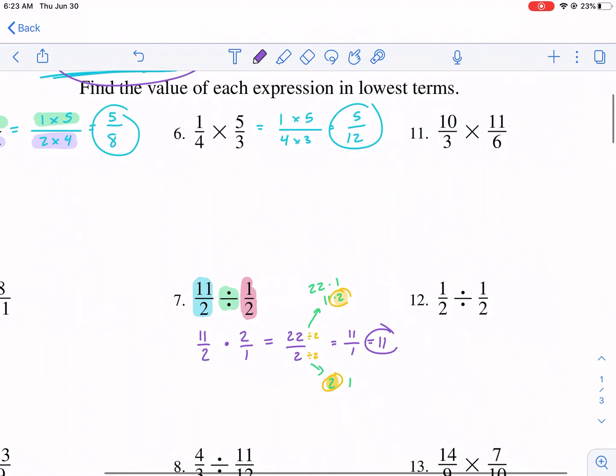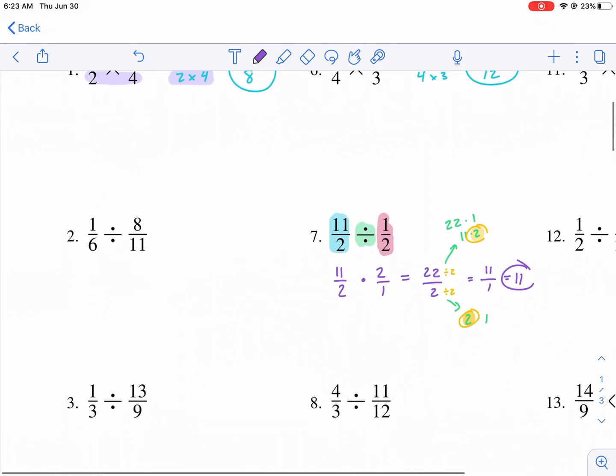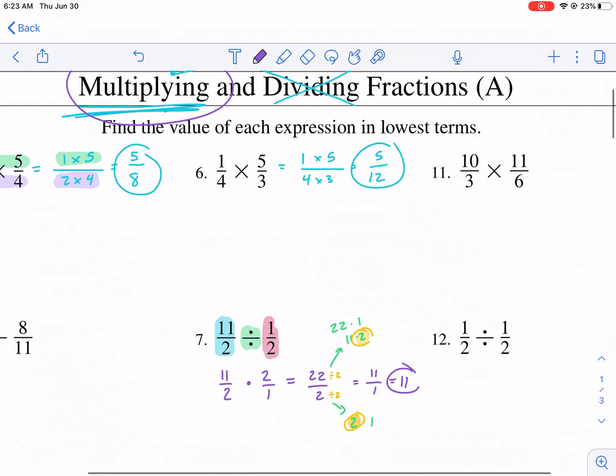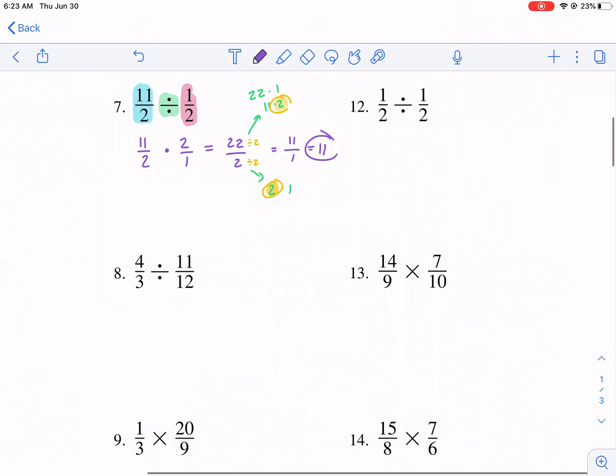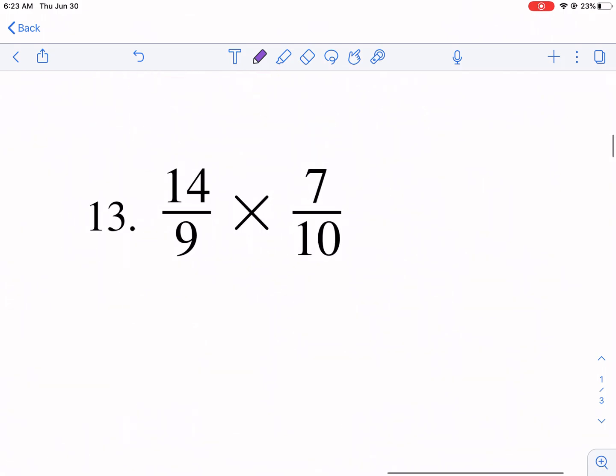Let's try to find a couple more that we can simplify. Let's see here. I'm going to look for some multiplication ones first. Number 13. Now, a couple different ways we can do this. I'm going to show you how we can multiply first and then simplify it later. I'm going to do that first, and then I'm going to show you how we can do it before we multiply to make our life a little bit easier.